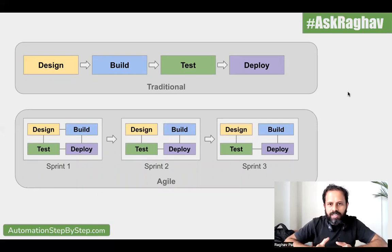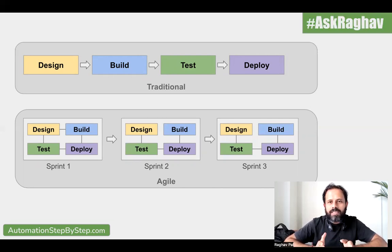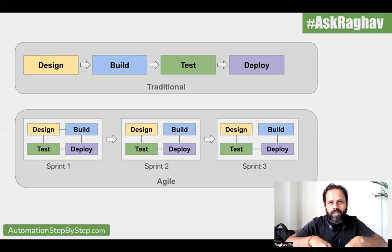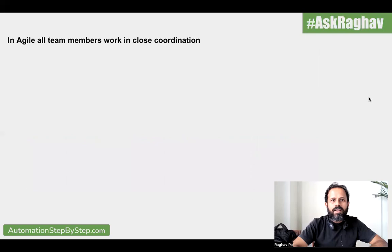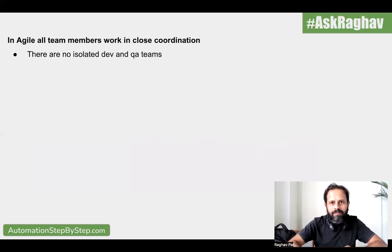In Agile, because we have these small phases with design, build, test, and deploy in every sprint, we do not have isolated teams. We have a single team called the sprint team or the scrum team, and we do not have very specific roles. We don't say that this is only the developer's task. The entire scrum team has visibility on each of the phases, the work of different team members, the entire requirements, and how things are being developed, tested, and deployed. All team members work in close coordination and collaboration with each other.